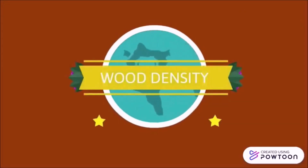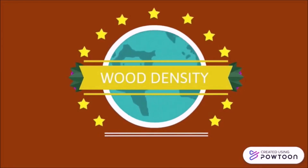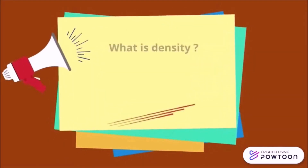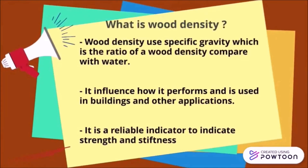Hello everyone, today we would like to show you about wood density. Density is defined as mass per unit volume. Wood density uses specific gravity, which is the ratio of wood density compared to water. It influences how wood performs and is used in building and other applications. It is a reliable indicator of strength and stiffness.